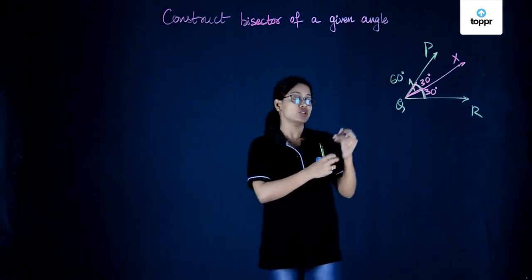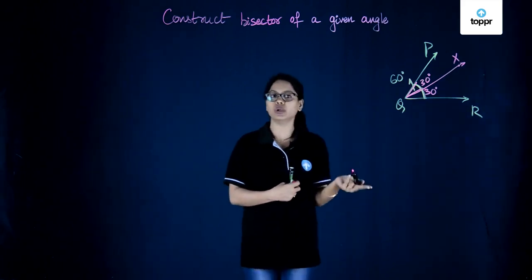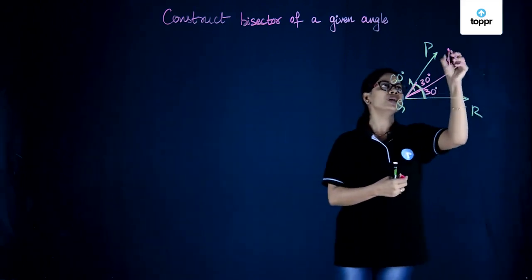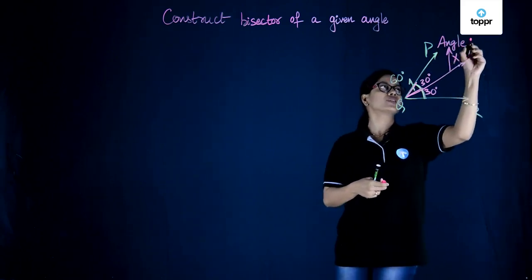So angle QX, so the line QX basically divides angle Q into two equal parts. So this QX is what is called the bisector of an angle or in short the angle bisector.